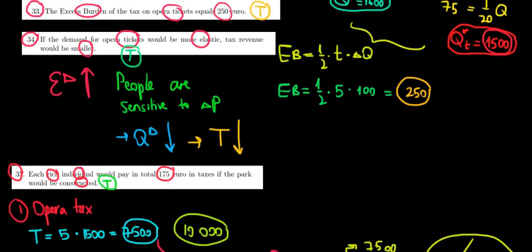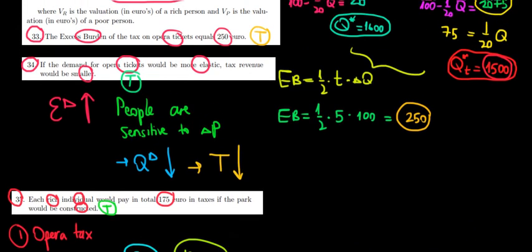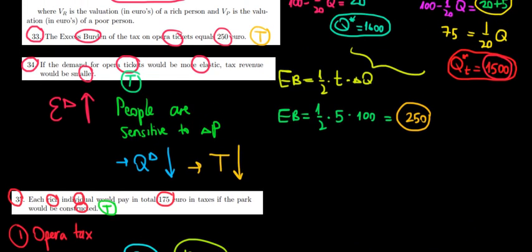But what we also need to keep in mind is that we have excess burden. That's also a distortion, a decrease in the utility of the rich people, a decrease from their valuation so to speak.